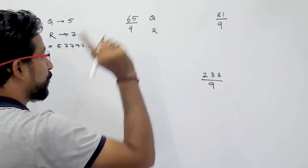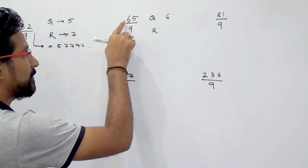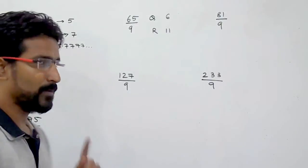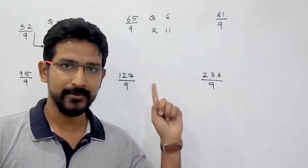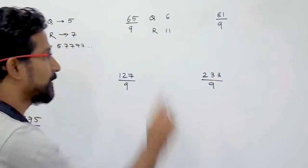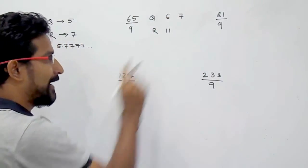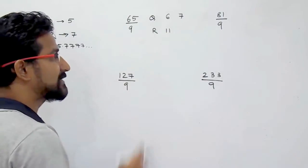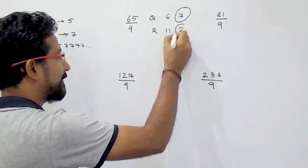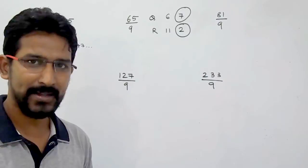For the quotient, you first write 6 here — but 6 is not the final quotient. For the remainder, 6 plus 5 is 11. Now when the remainder you get is greater than 9, what you have to do is increase the quotient by 1. So it becomes 7, and then 11 minus 9 is 2. So your quotient will be 7 and the remainder will be 2 — not 6 and 11.